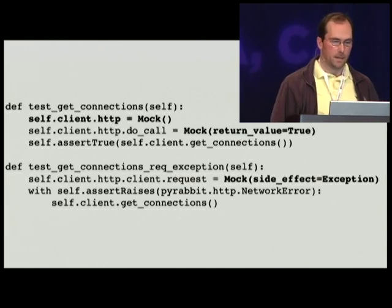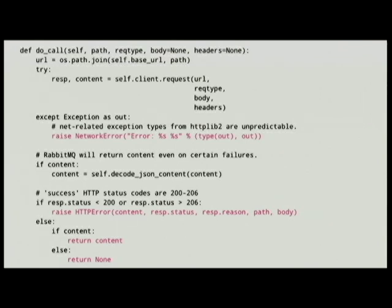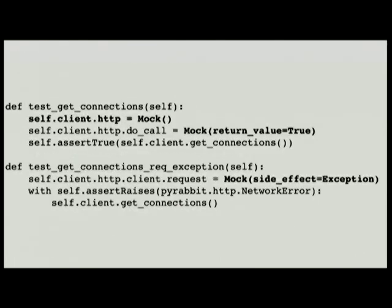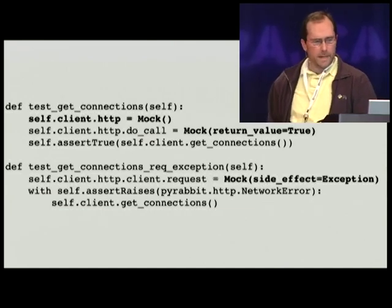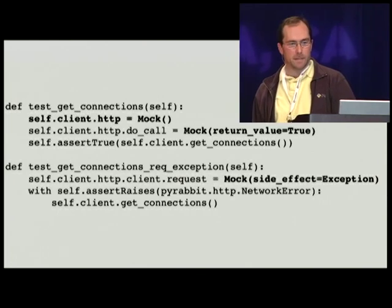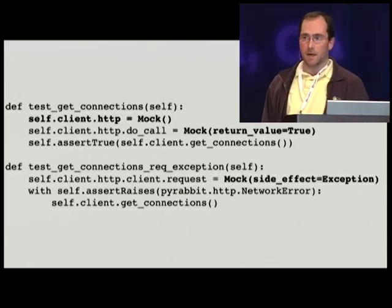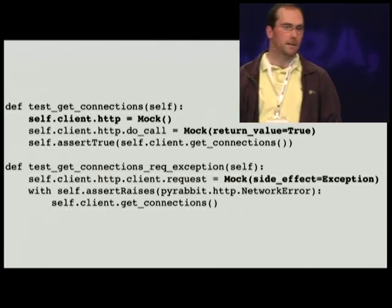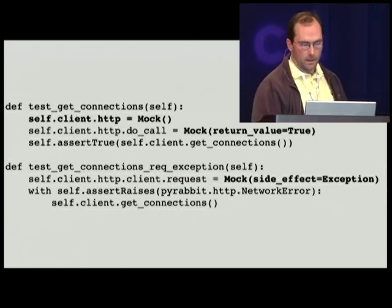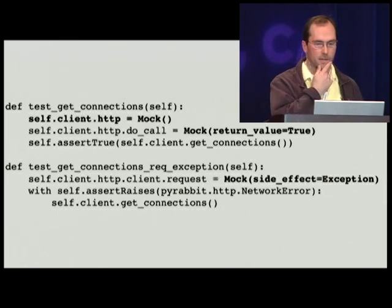Then I have test_get_connections, and I'm saying the request raises an exception. The response and content equals self.client.request — if that throws any kind of exception, the do_call method should raise a NetworkError, because at this point in execution I'm assuming anything that goes wrong is related to the network. I'm using self.assertRaises as a context manager — I'm asserting that what I'm about to do raises a PyRabbit HTTP NetworkError. Then I run self.client.get_connections. And I'm using mock by setting the side_effect parameter of my mock object instantiation to be the exception. And then it should raise a NetworkError, which I've accounted for here by saying assertRaises NetworkError.